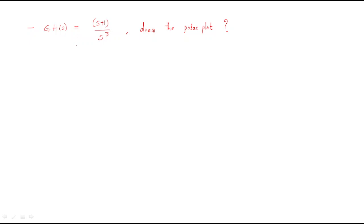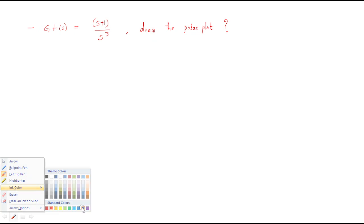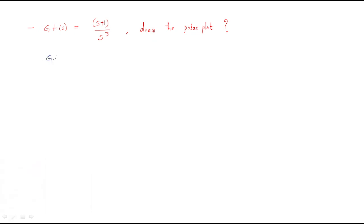In this discussion we will discuss the given problem: G(s) = (s+1)/s³. We have to draw the polar plot. The polar plot gives the frequency response for zero frequency as well as infinite frequency. First we should convert into the magnitude and phase form by replacing s with jω, so we get (jω+1)/(jω)³.